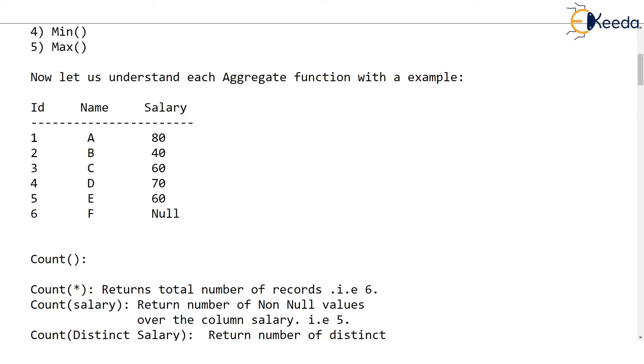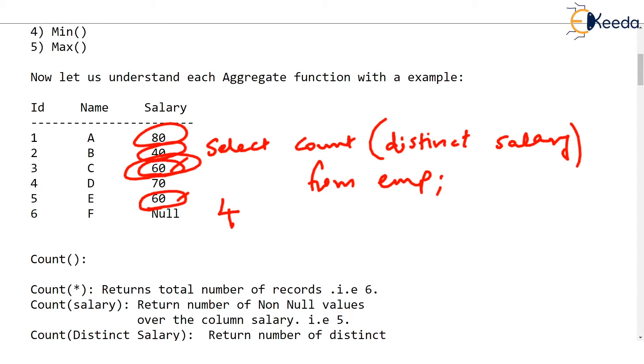Now, there is one more way of using count. Some of the salaries are same for 2 employees. What if I don't want to count this repeated salary? That means, I want to count this 60 only once. Then, we give select count distinct in the bracket. What do you want to count? Salary. So, we are counting only distinct salaries from emp. The output of this will be 4. First salary 80, second is 40, third is 60, fourth is 70. This 60 won't be counted because we have said distinct salaries and this null won't be counted. So 4 is the answer.